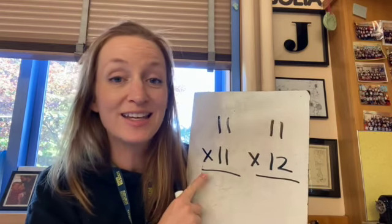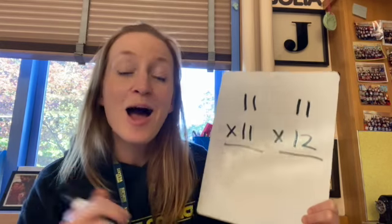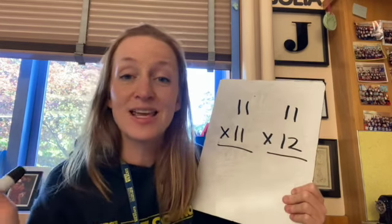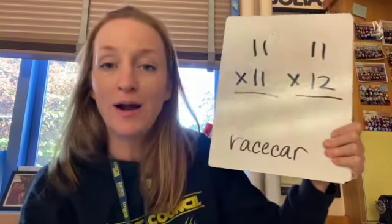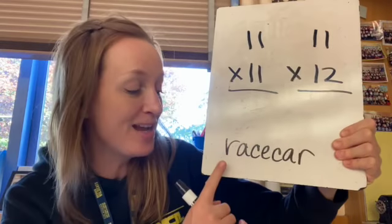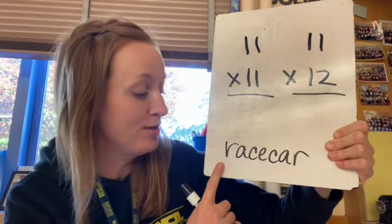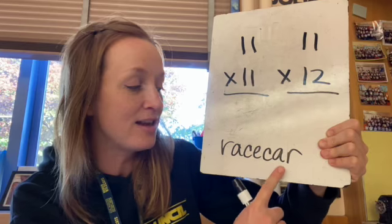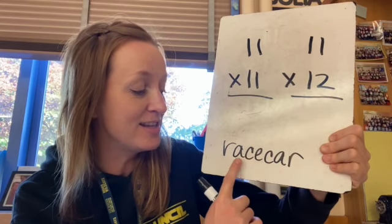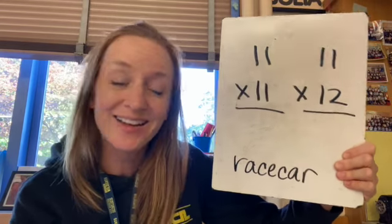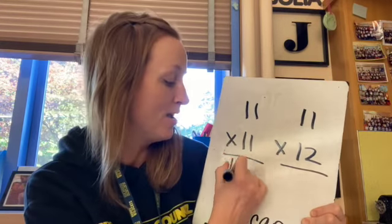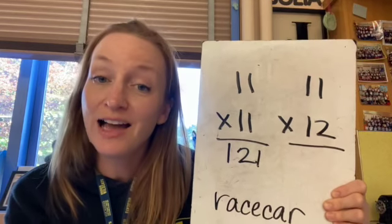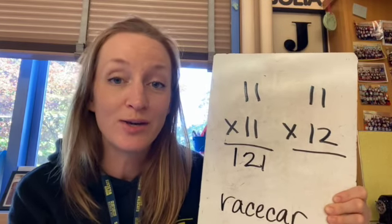Now 11 times 11 gives an answer that's actually a palindrome. Do you know what that is? A palindrome is something that is the same forwards and backwards. For example, the word race car is a palindrome. Look at that. Do you see how it's spelled the same way forwards and backwards? R-A-C-E-C-A-R. R-A-C-E-C-A-R. Cool, right? Well, the answer to 11 times 11 is also a palindrome. It's 121. 11 times 11 is 121.